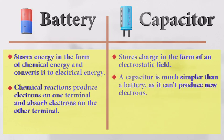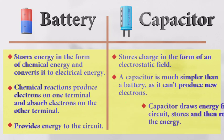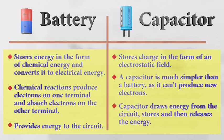But capacitors can't produce new electrons. A battery provides energy to the circuit, whereas a capacitor draws energy from the circuit, stores it, and then releases the energy when it is needed.